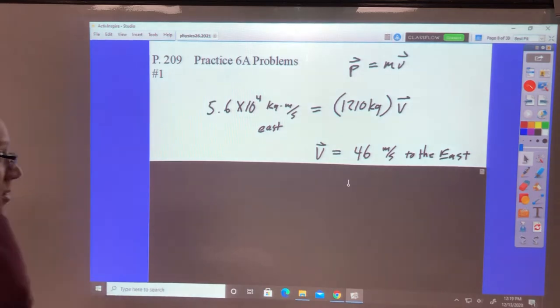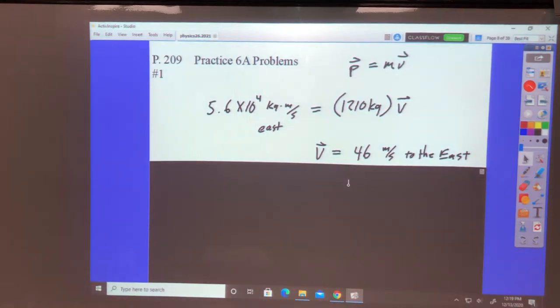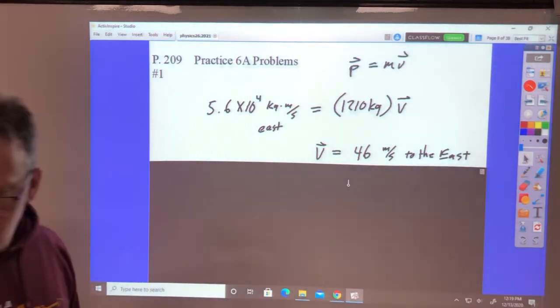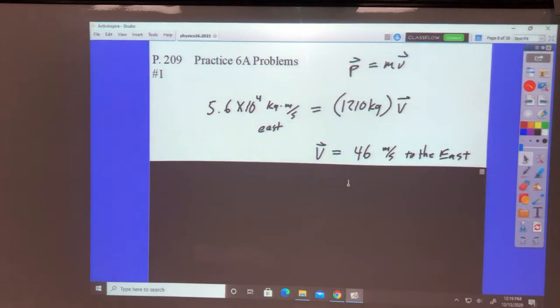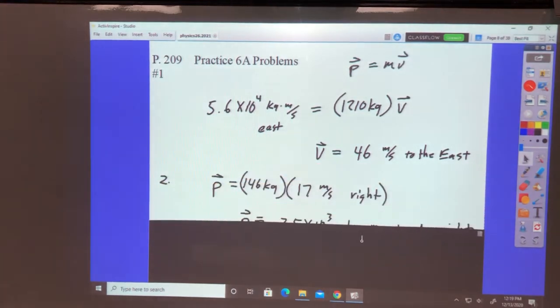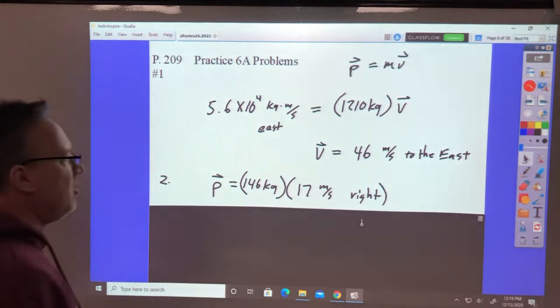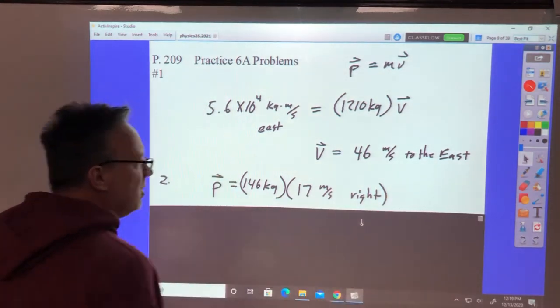Number two: Ostrich with mass of 146 kilograms is running to the right, we'll call that positive, velocity is 17 meters per second. Find the momentum. It's just mass times velocity, 17 meters per second to the right, so the momentum is 2,500 kilograms times meters per second to the right.